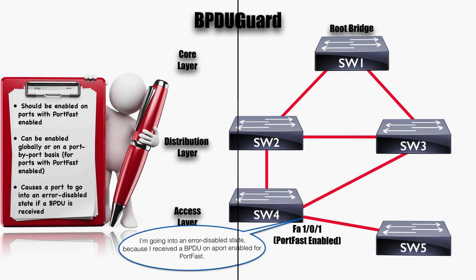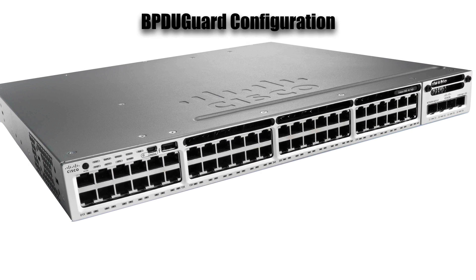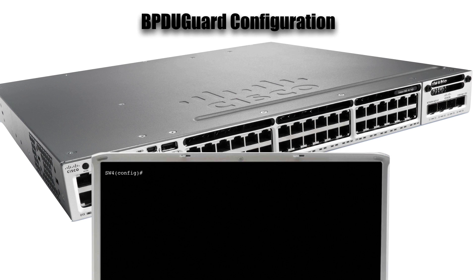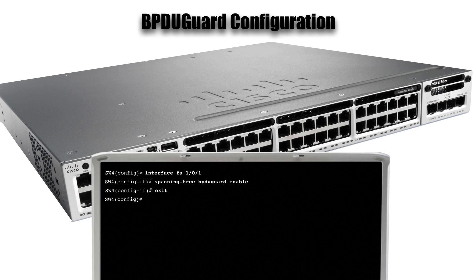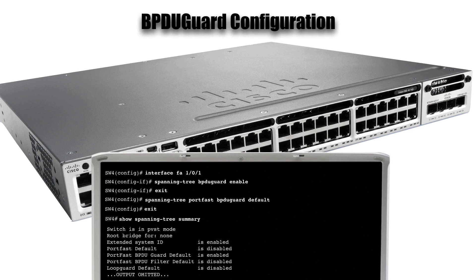Now let's see how to set this up. The assumption is we've already configured a port for PortFast if we're going to turn on BPDU Guard on that port. To enable it for a single port, go to interface FastEthernet 1/0/1 and enter the command: spanning-tree bpduguard enable. If we want to turn this on globally — which will enable it on all ports that have PortFast configured — we can use: spanning-tree portfast bpduguard default. To verify that BPDU Guard is enabled, use the command: show spanning-tree summary. About the fourth line up from the bottom, we can see 'PortFast BPDU Guard Default is enabled' — that's our confirmation.